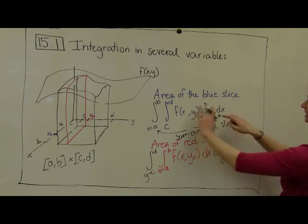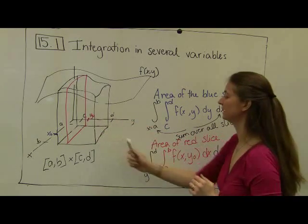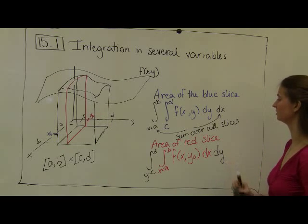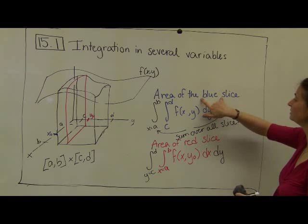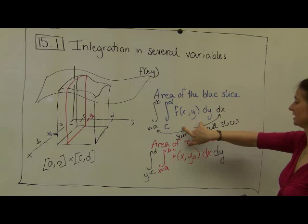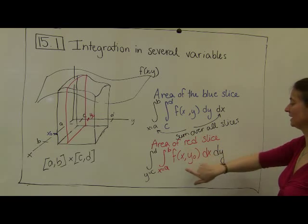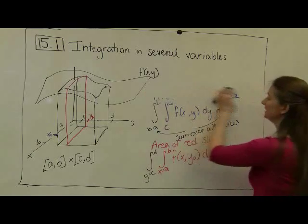So what this is telling us, all of this visual graphical interpretation, obviously this isn't a formal analysis proof, but we don't need formal analysis proofs, is that we're saying that if I take the area of the blue slice and sum all of the slices, that's going to give me the same thing as the area of the red slice and summing up all of the slices. And the grand conclusion is what we call Fubini's theorem.